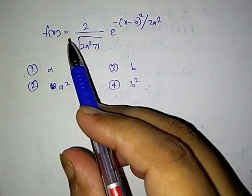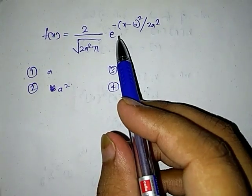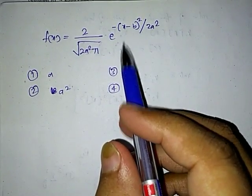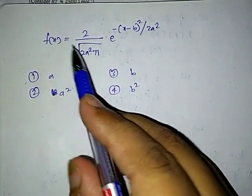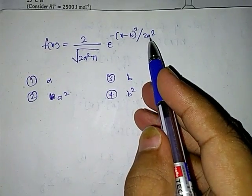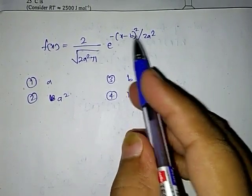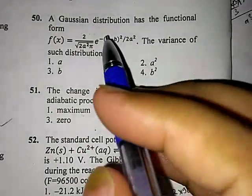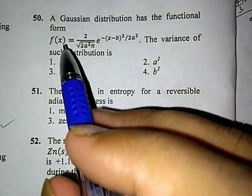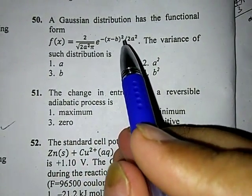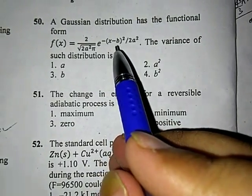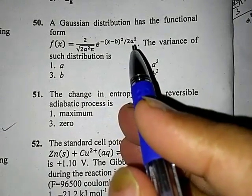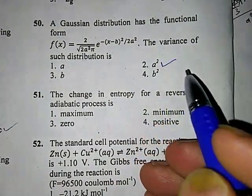The next question gives a Gaussian equation and asks for the variance of the distribution. Whenever a Gaussian equation is given, the term appearing in the denominator of the exponent (the power of e) is the variance. Looking at the equation, the denominator of the exponent is a², so the variance is a². The correct option is a².